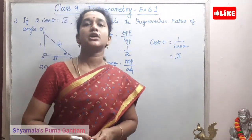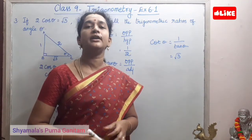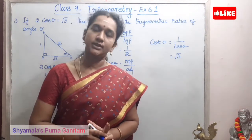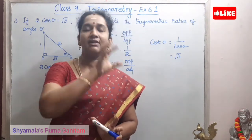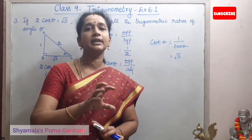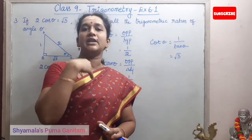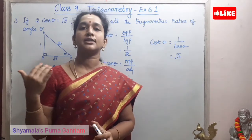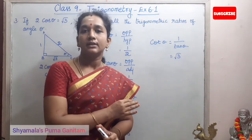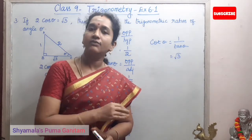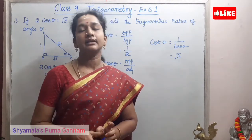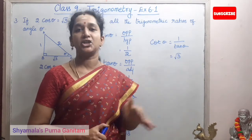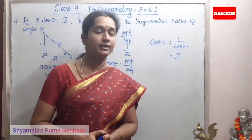This is how we find all the trigonometric ratios. If any value is missing, accordingly we have to find it using the Pythagorean theorem, and then we get the remaining trigonometric ratios.